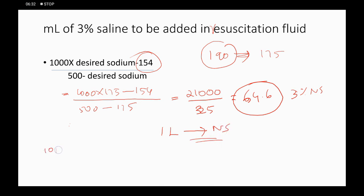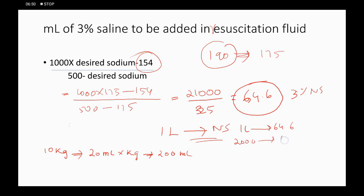For a 10 kg child in shock, we give 20 ml/kg = 200 ml of fluid. Since we add 64.6 ml of 3% saline per liter, for 200 ml: 64.6 divided by 1000 multiplied by 200 equals approximately 12 ml of 3% saline to add to the 200 ml resuscitation bolus.